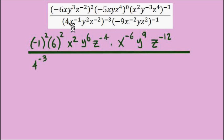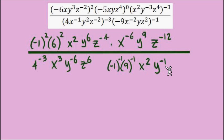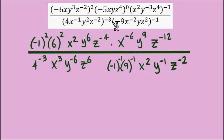Working negative 3 into the 4 and then into x gives us x to the power of positive 3, y to the power of negative 6, and z to the power of positive 6. For the last set of parentheses I see another negative coefficient, so negative 9 becomes negative 1 times 9, and each gets this exponent of negative 1. Then for the variables: x to the power of negative 2 times negative 1 makes x to the power of positive 2, y to the power of negative 1, and z to the power of negative 2. All exponents outside of parentheses are now taken care of.